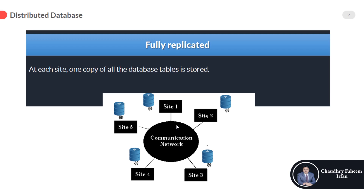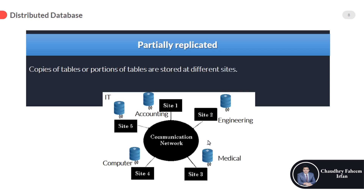One disadvantage of fully replicated design is that we need more storage space. It is also hard to update data across all sites — for example, if site 1 updates a name, that change must be propagated to sites 2, 3, 4, and 5 as well. So it is hard to update, but this technique also has some advantages.